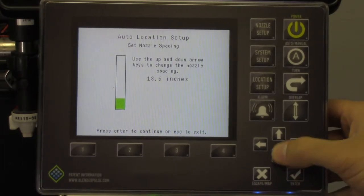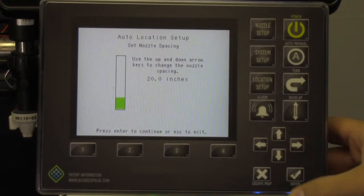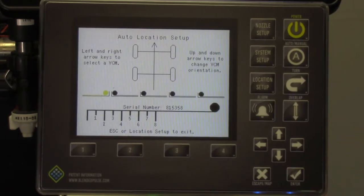Make sure you have the correct nozzle spacing. When in doubt, pull out your tape measure to confirm the distance. Once you have the correct spacing, you can move to the next screen by pressing the check key on the display.